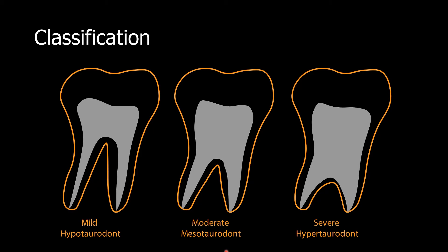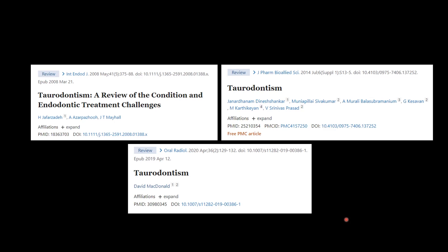Pterodontia is classified into three types: a mild or hypotaurodont, where the pulp chamber is large; a moderate or mesotaurodont, where the pulp chamber and bifurcation are almost at the middle third of the root; and the severe or hypertaurodont, where the bifurcation is at the apical area. These are a few papers that are helpful as further reading about pterodontia. Thank you very much — I'll see you again with another video.